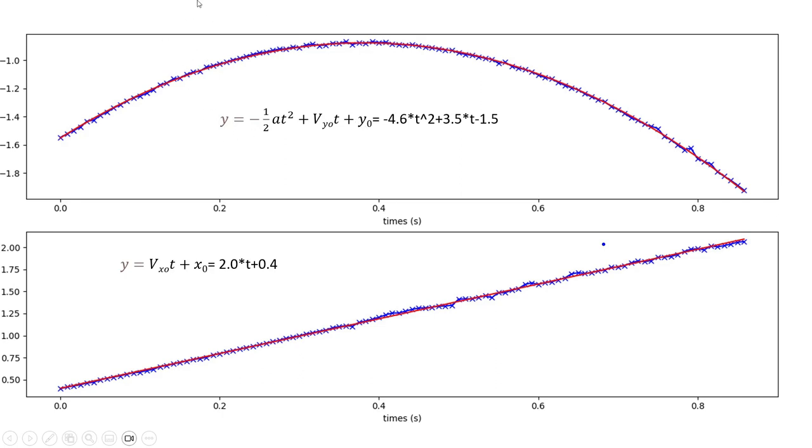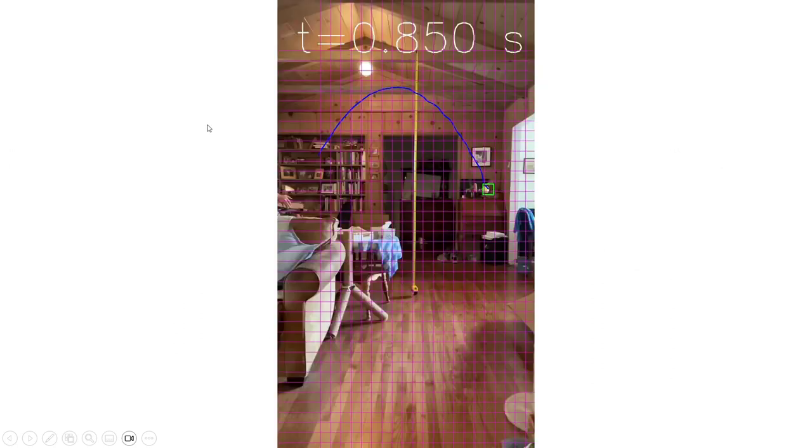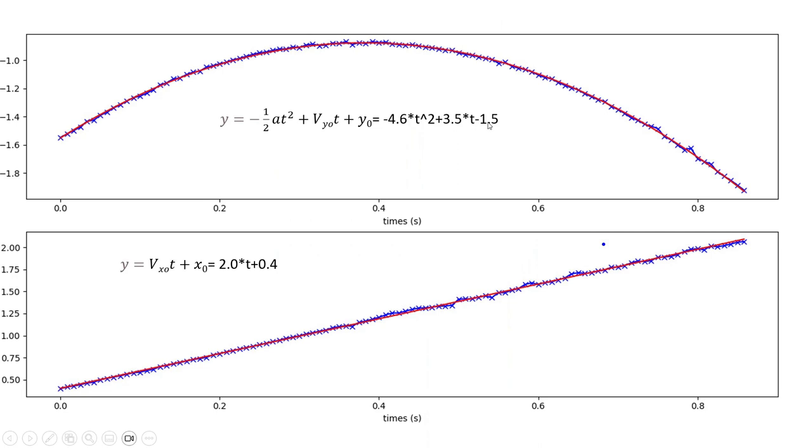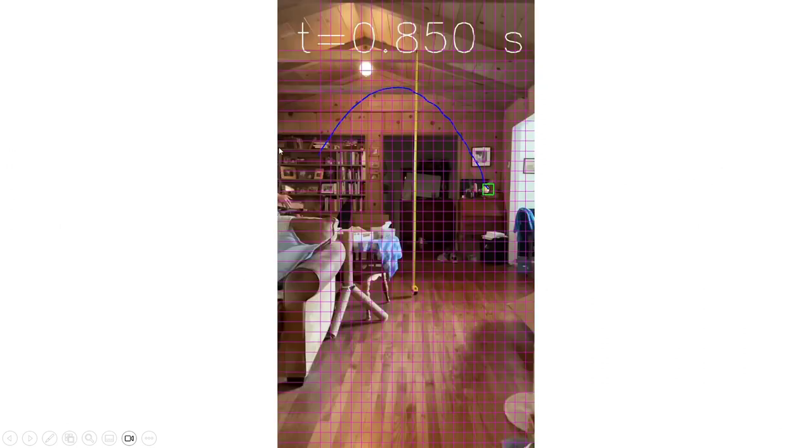And then we also just have some non-zero starting height, because here we're, positives up, negative is down. But we're defining zero as the top of this measuring tape where the rafter is in the living room here. And so then we have to add negative 1.5 meters, because it starts 1.5 meters from the top. And likewise for x, the model it gives us is the initial x velocity is 2 meters per second, and the initial x offset is 0.4 meters, which is just measured from the left side of the frame, roughly where I'm standing, because it starts with my hand sort of swinging out.